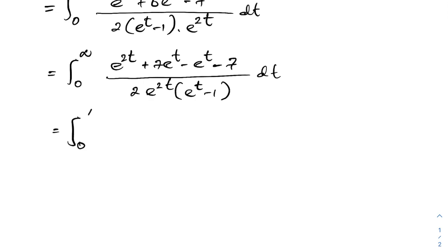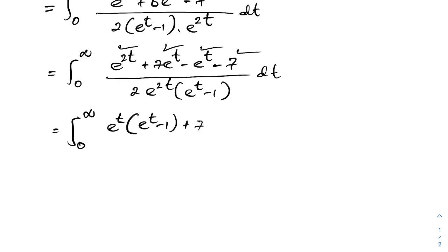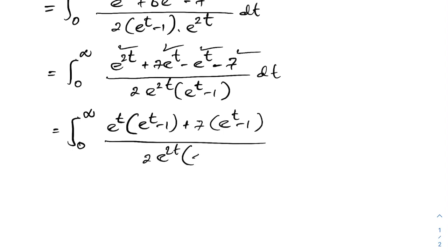The integral from 0 to infinity: we take e^t minus 1 as a common factor in the numerator, giving (e^t minus 1) over 2 times e^(2t) times (e^t minus 1). The (e^t minus 1) terms cancel.